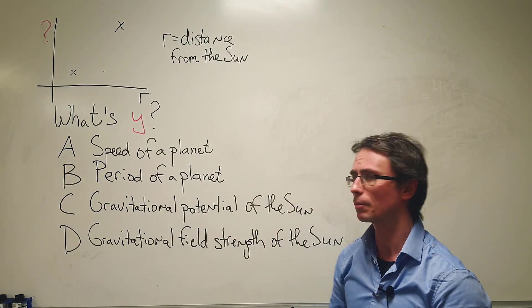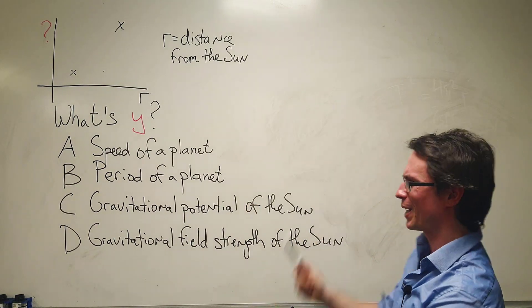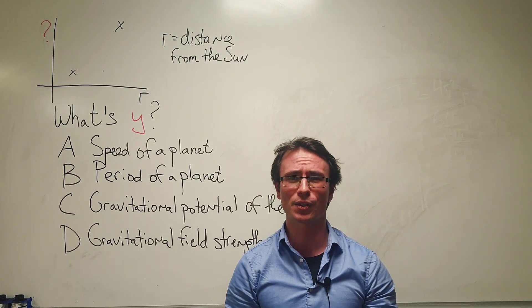What is the mystery quantity on the y-axis? Is it the speed of a planet? Is it the period of a planet? Is it the gravitational potential of the sun? Or is it the gravitational field strength of the sun?